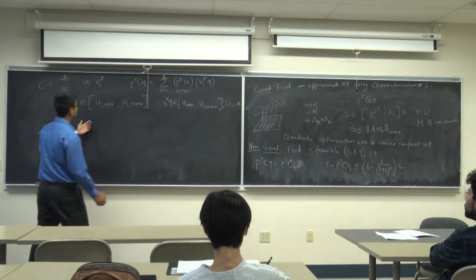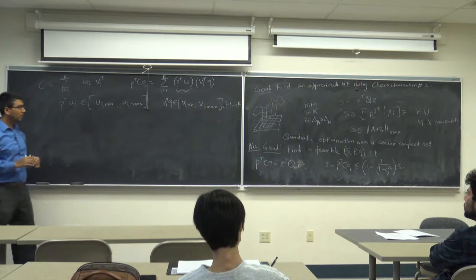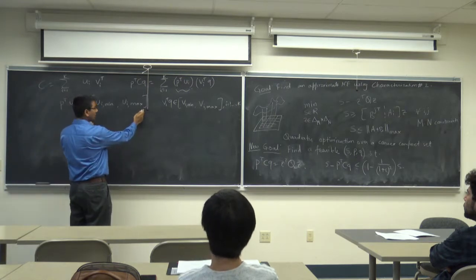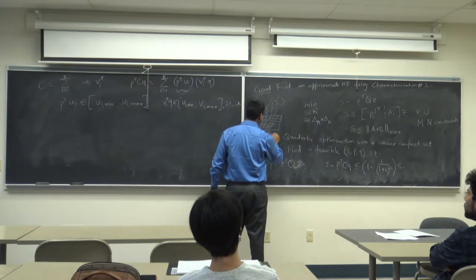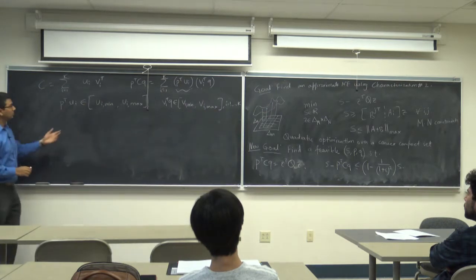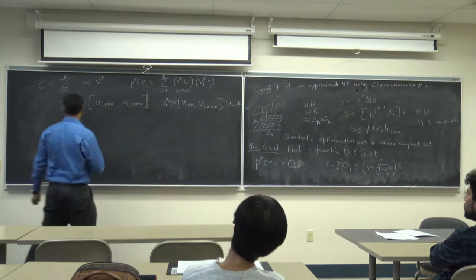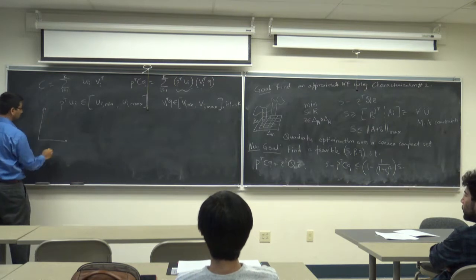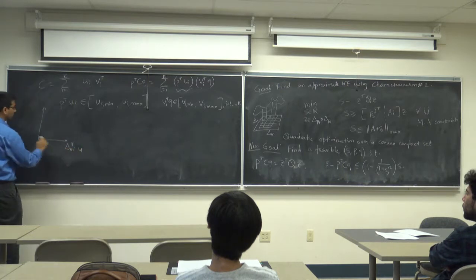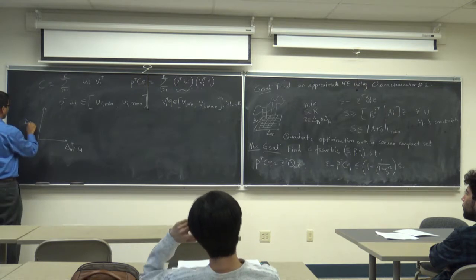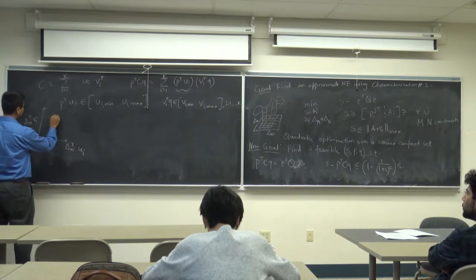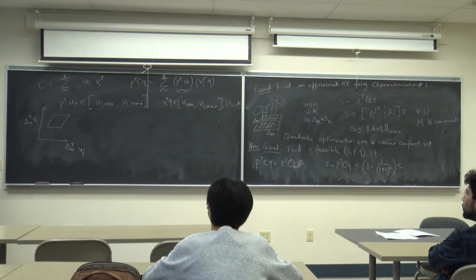Now let's formulate the approach. Instead of doing the gridding for the original delta M and delta N space, the key idea is to grid the projected space: P transpose U_i space and V_i transpose Q space. For each i from 1 to K, we define a non-uniform grid. The grid for U_i min to U_i max is written as a union over L from 1 to L of intervals [alpha_L, alpha_L times (1 plus epsilon)], where alpha_2 equals alpha_1 times (1 plus epsilon), alpha_3 equals alpha_2 times (1 plus epsilon), and so on.